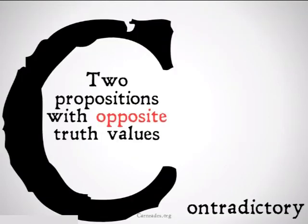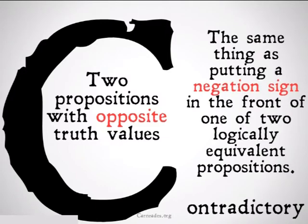Contradictory is defined as two propositions with opposite truth values. This is basically the same thing as putting a negation sign in front of one of two logically equivalent propositions, or just sticking a biconditional, a material equivalent sign, in between two propositions and getting a self-contradictory proposition. Let's take a look.